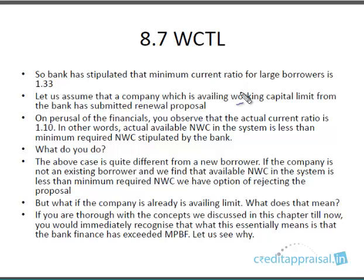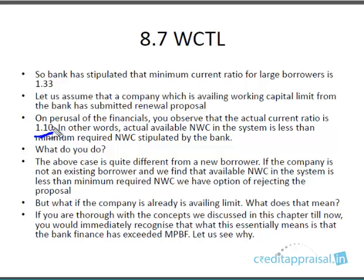Let us assume that a company which has been availing a working capital limit from the bank has submitted a renewal proposal. As a banker, on perusing the financials, you observe that the current ratio is 1.1 — in other words, the actual NWC is less than the minimum required NWC. What do you do as a banker if the current ratio as per the latest audit balance sheet is less than the minimum norm — whether 1.33, 1.5, or 1.15 as per your bank?